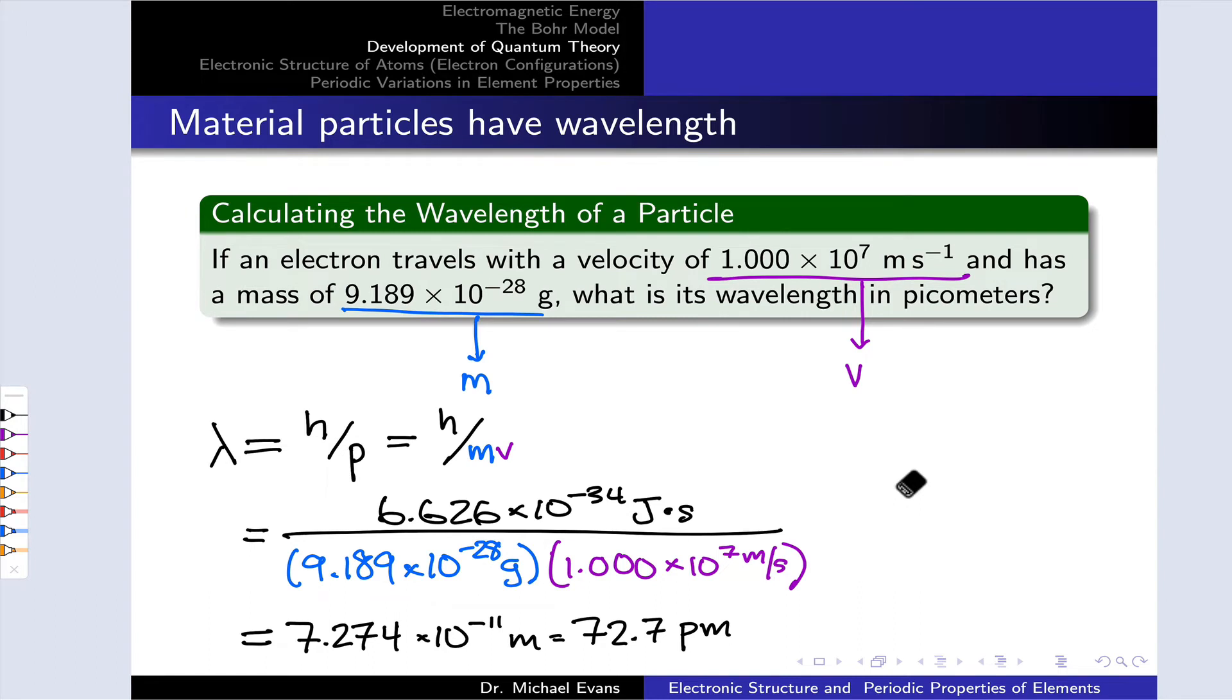Now, the wavelength here, the number is not so important. What's interesting about this number is to think about it in terms of what the classical diameter of an electron particle is.